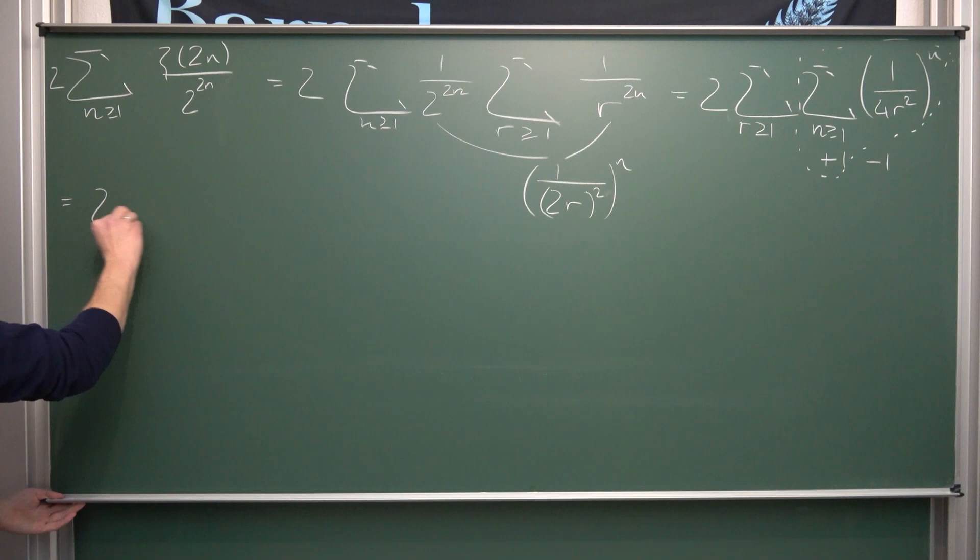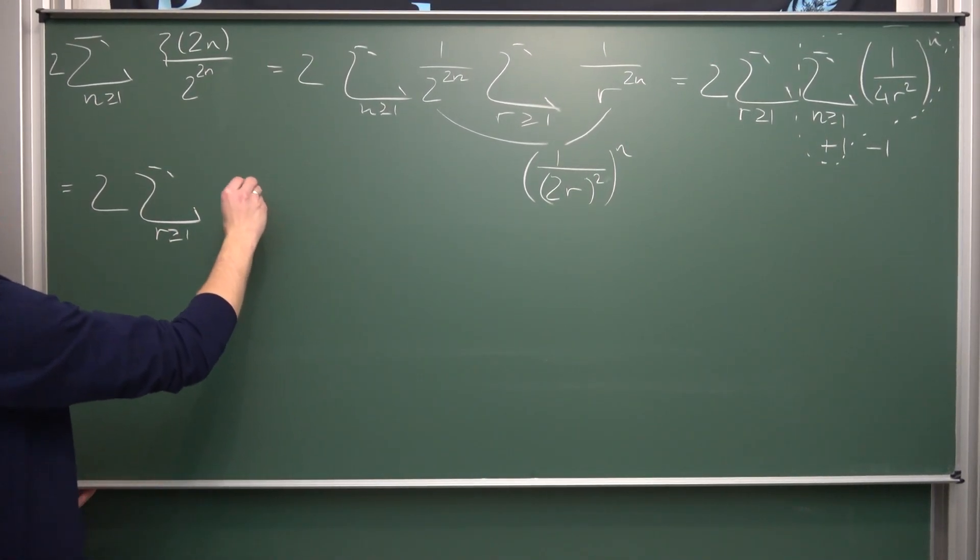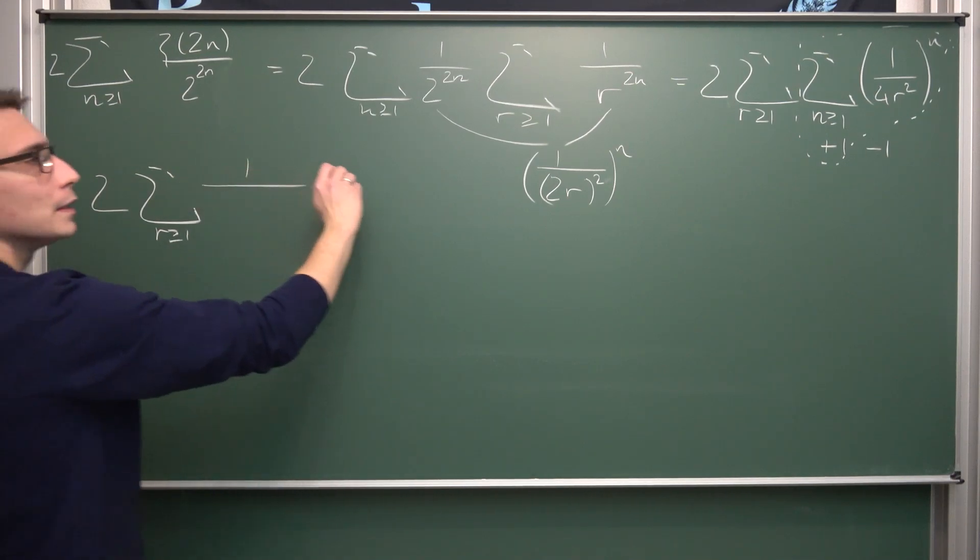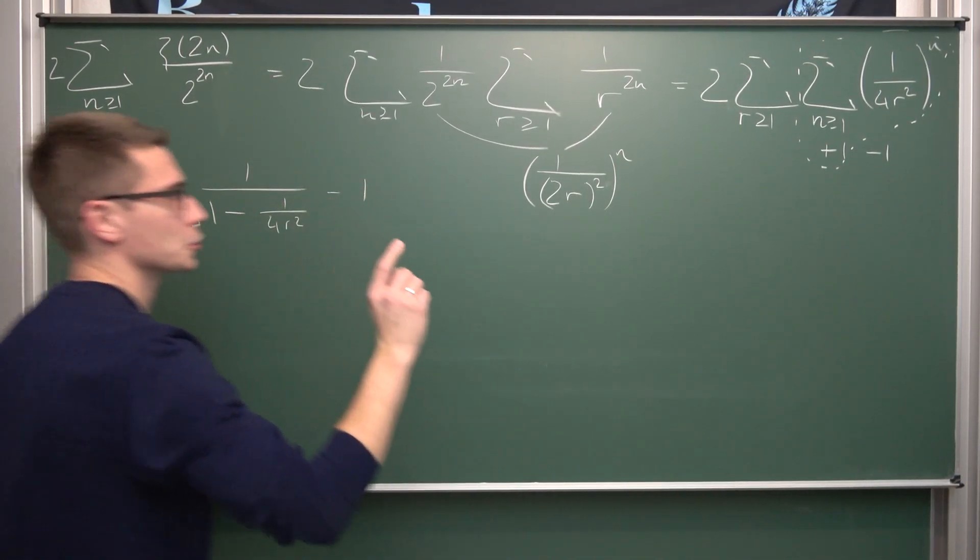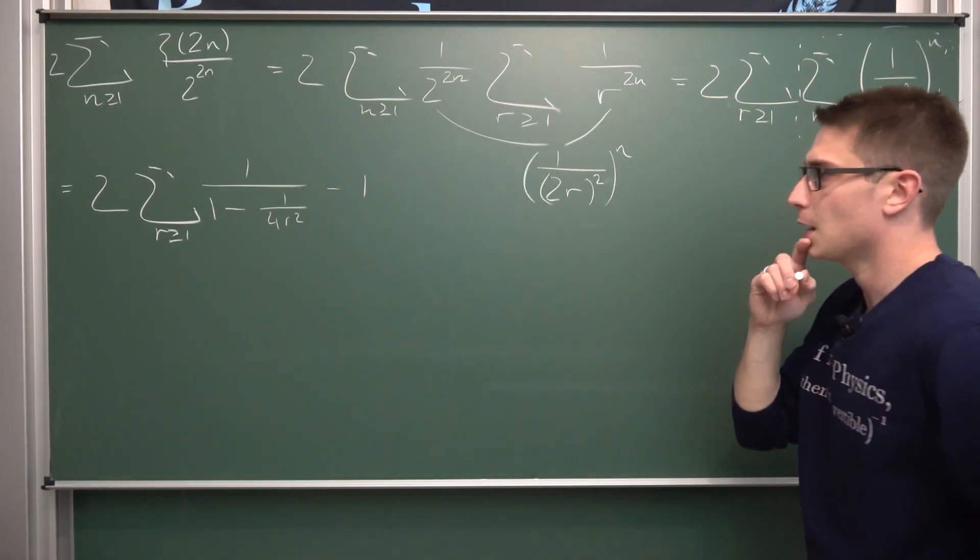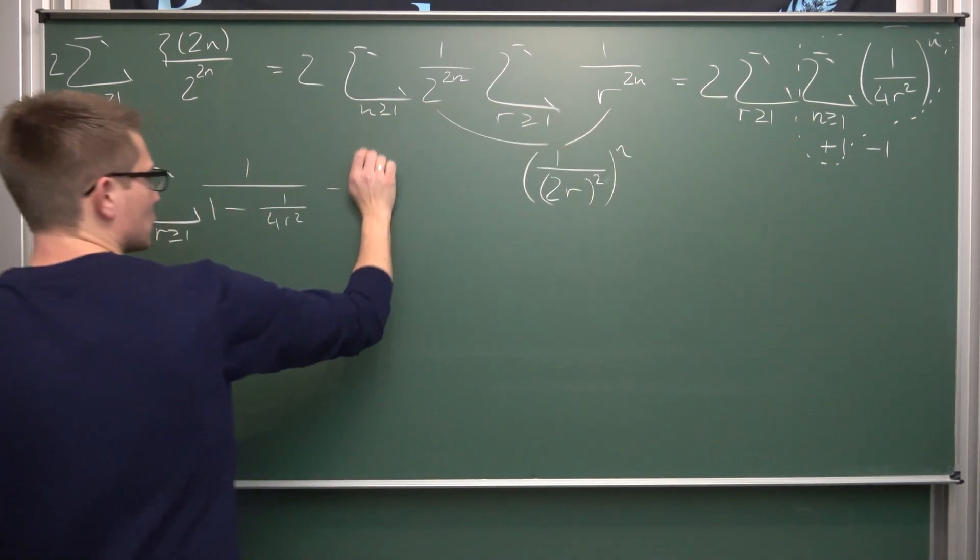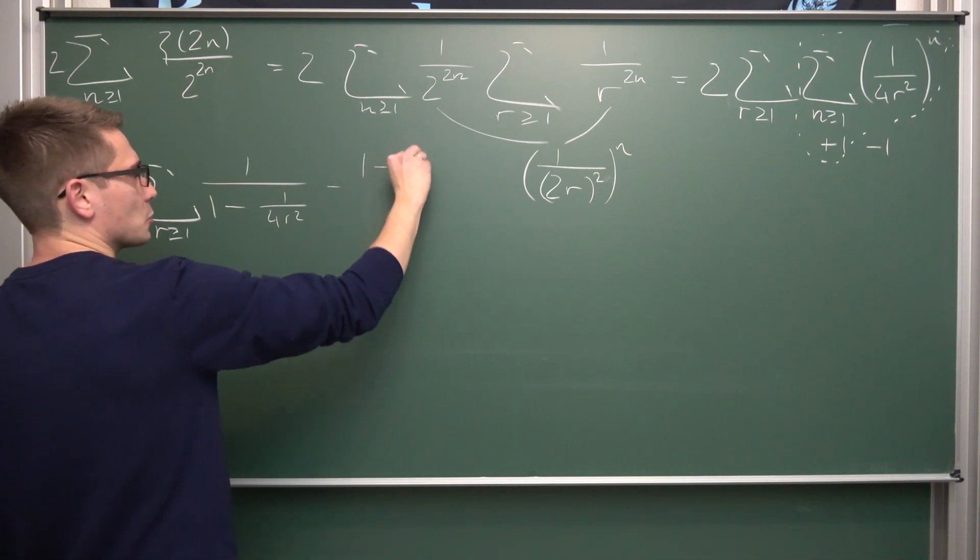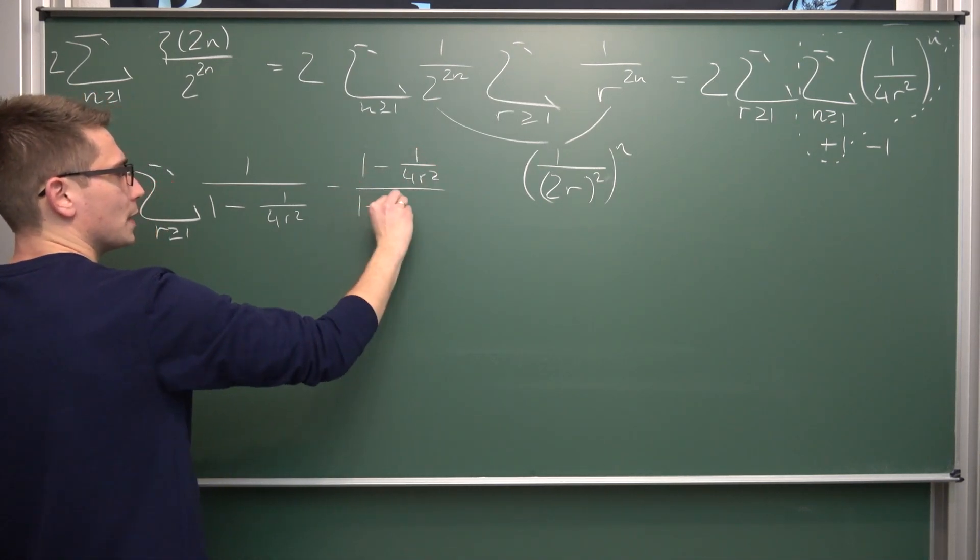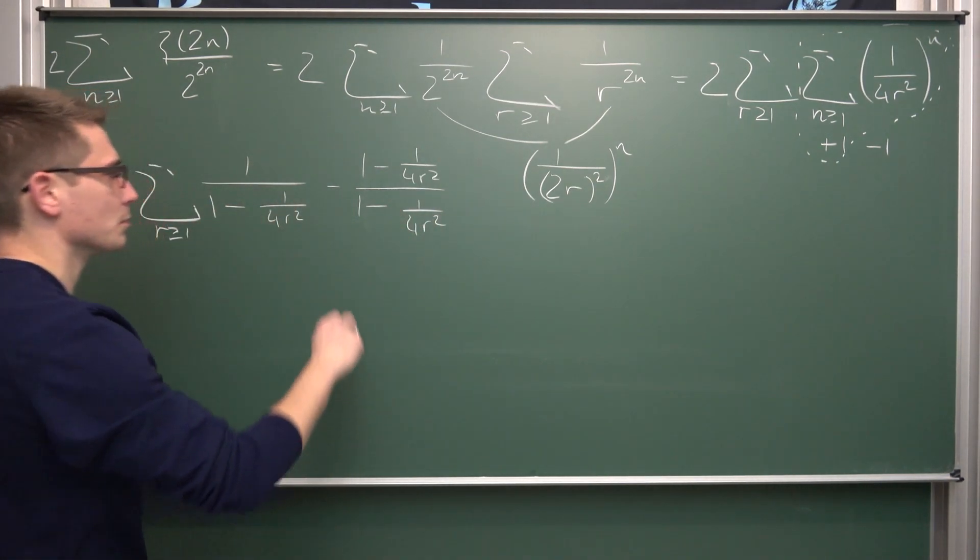Meaning overall this is going to turn into 2 times an infinity sum where r is greater or equal to 1. And now let me see, we have 1 over 1 minus 1 over 4r squared, this is looking ugly, minus 1. This should work out I think. And now we can go ahead and simplify some things. I mean we can add those two together, meaning we are going to expand the 1 by 1 minus 1 over 4r squared over 1 minus 1 over 4r squared.